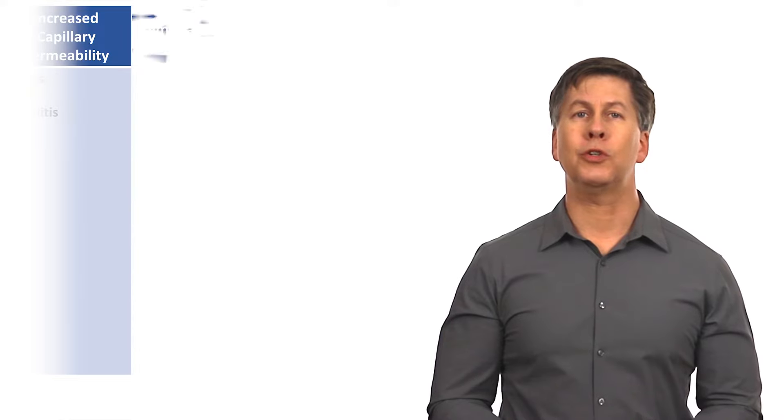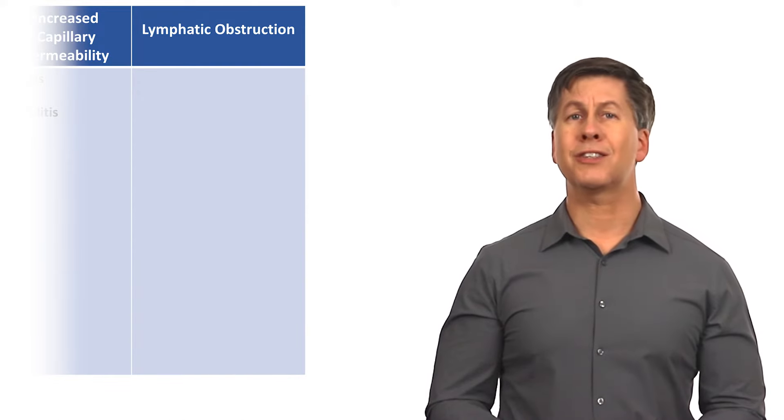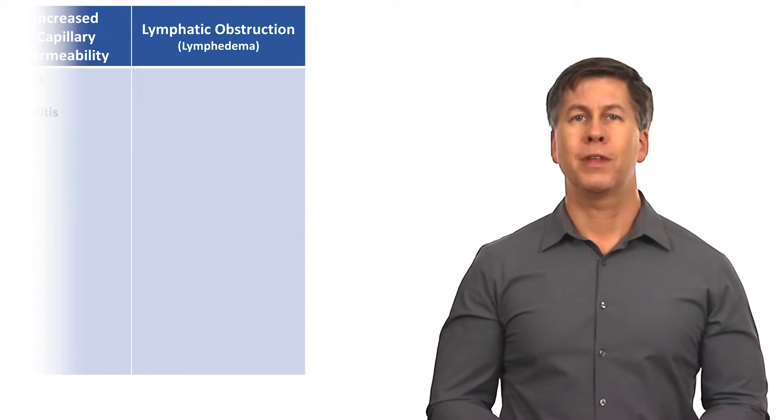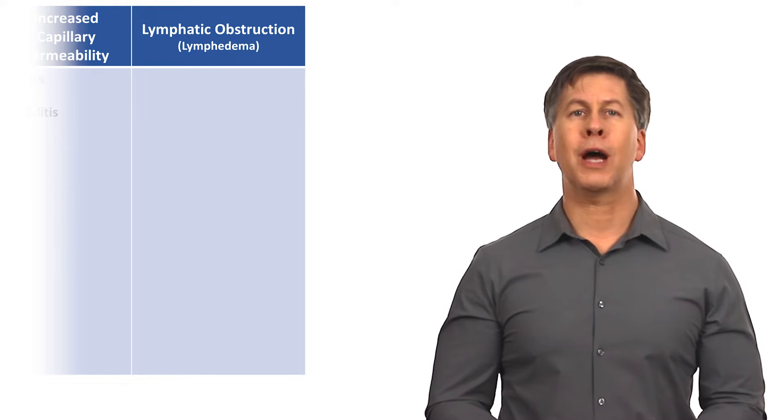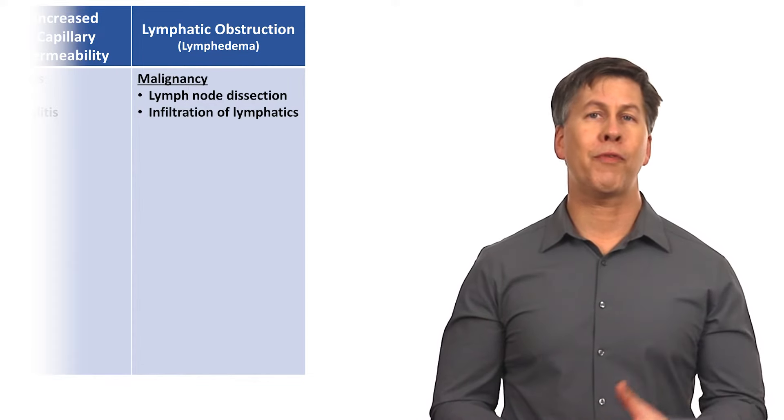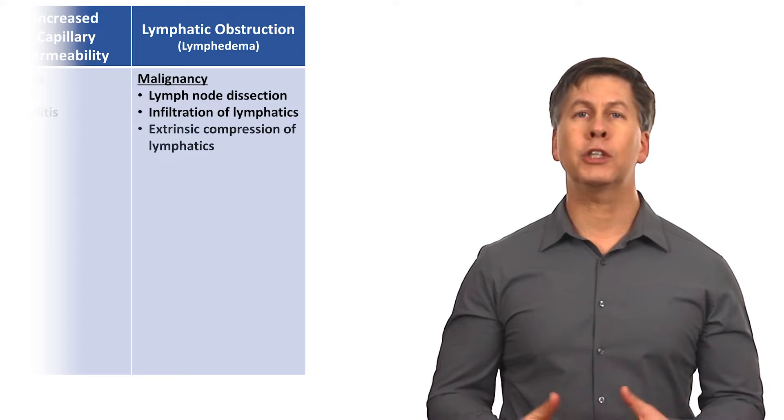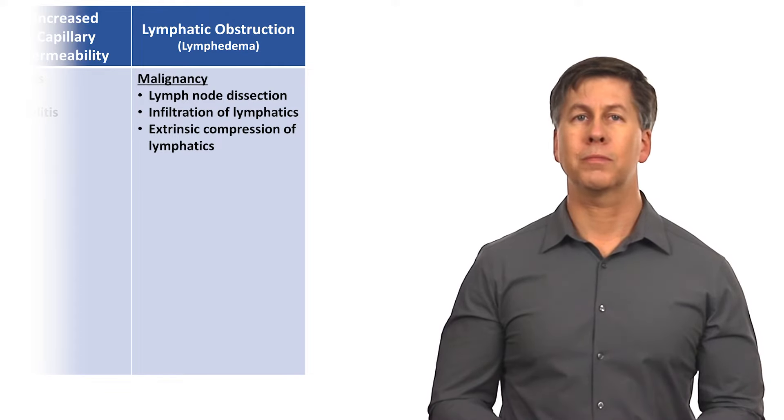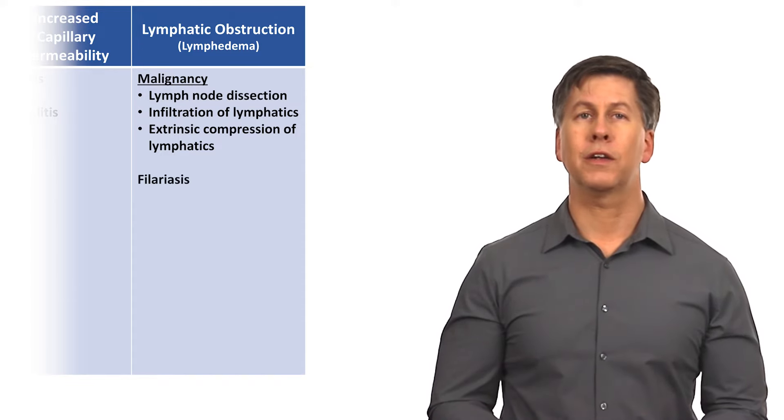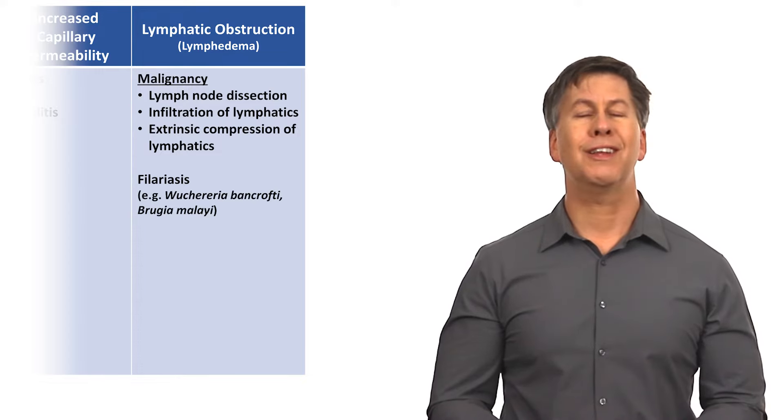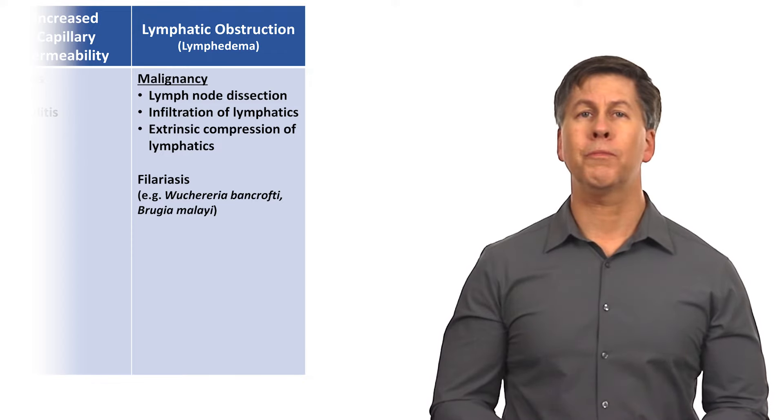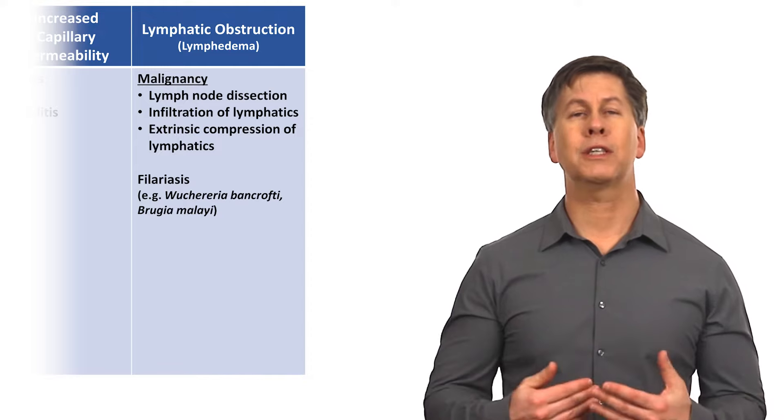The fourth category is edema due to lymphatic obstruction, which, because it presents differently and is treated differently, is given the special name lymphedema. In the United States, lymphedema is predominantly caused by malignancy, either from surgical lymph node dissection, from infiltration of lymphatics by a tumor itself, or from extrinsic compression of lymphatics by a tumor mass. In developing parts of the world, another significant cause of lymphedema is filariasis, which is a chronic parasitic infection by roundworms living inside the lymphatics and which are endemic to the tropical parts of Central and South America, Africa, Asia, and the Pacific Islands.